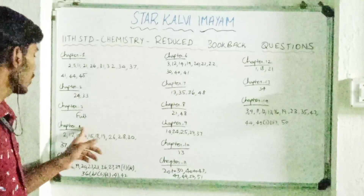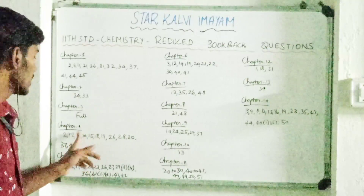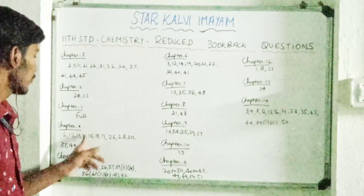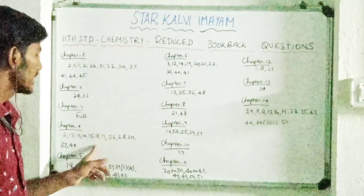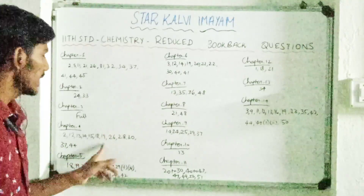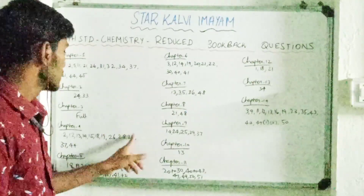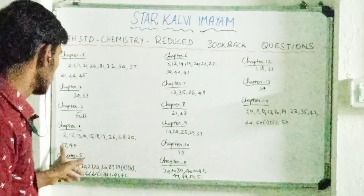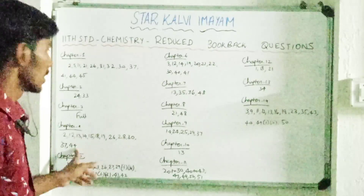Next, Chapter 4 question numbers: 2, 12, 13, 14, 15, 18, 19, 26, 28, 30, 37, 44.